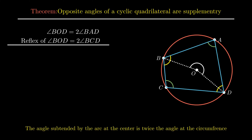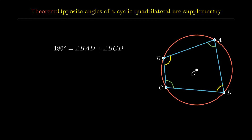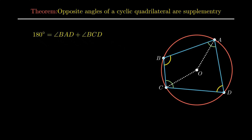On adding these two equations, we get the LHS as the sum of angle BOD and reflex of angle BOD, which forms a complete angle and equals 360 degrees, while the RHS becomes twice the sum of angle BAD and angle BCD. On simplification, we get 180 degrees equals the sum of angle BAD and angle BCD. Now to prove the other pair of opposite angles as supplementary, join point O to point A and point C.